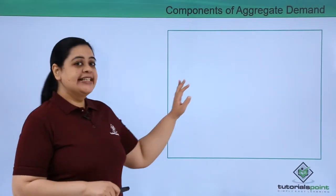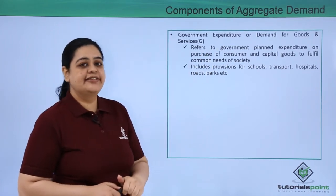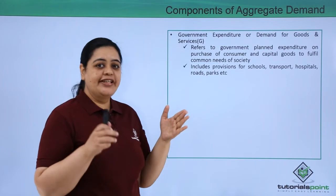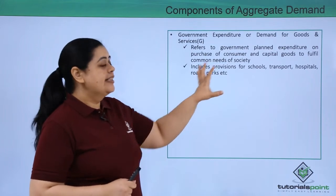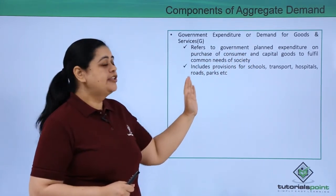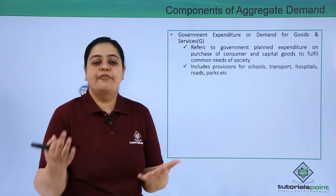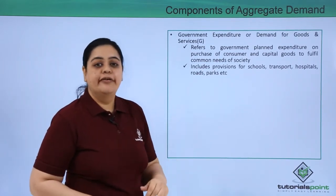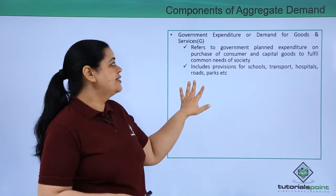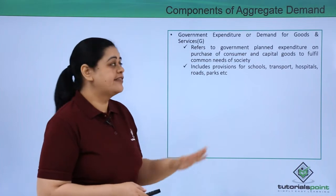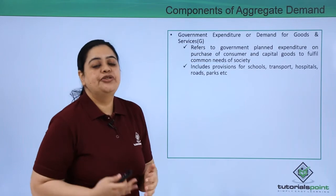The next component is government expenditure or demand for goods and services, represented by G. In an economy, the government spends money and demands certain goods and services. This is generally the government's planned expenditure on purchase of consumer and capital goods — for example, providing infrastructure such as schools, hospitals, roads, and parks. The government demands goods and services for these purposes, and thus government expenditure also contributes to aggregate demand.